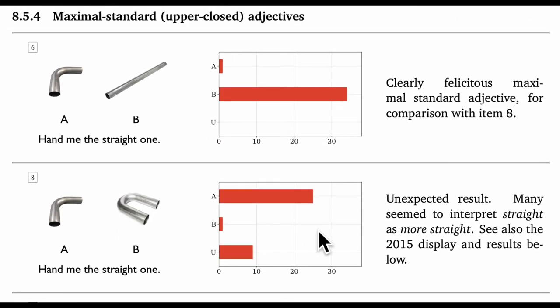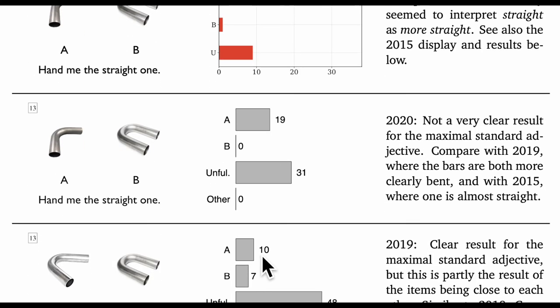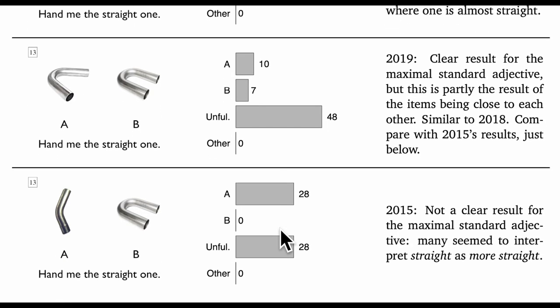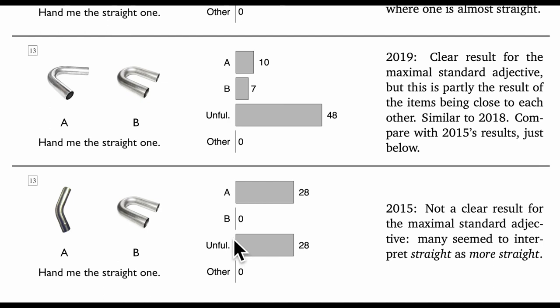Our next crucial item is the maximal standard case. Here I use straight. My control item worked great. In a display with one very straight rod and one not straight one, everyone responded to hand me the straight one by choosing the straight rod. So good. But then comes my crucial item. In a display with two bent rods, the prediction is that people will determine that hand me the straight one is unfulfillable. But about two thirds of people chose what looks like the straighter rod. And only one third in turn conformed to the expectations of the Syrett et al. theory. I'm not sure what the story is here. In 2020, the results conformed a bit better, but it's still not a slam dunk. To get the expected result, it seems like you have to make the two rods both very bent, as in 2019. And if one of the rods is nearly straight, you get the pattern we saw this year, with a split between choosing the straight one and determining that the request can't be fulfilled.